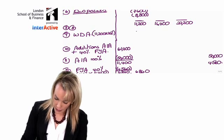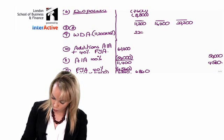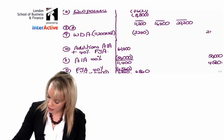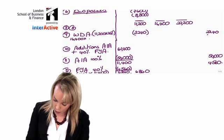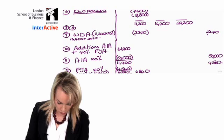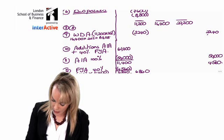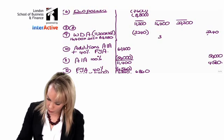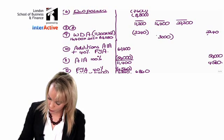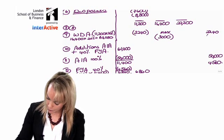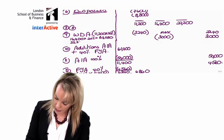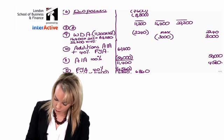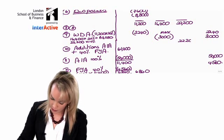On the general pool you multiply that figure by 20%, which gives you something like 2,240. On the expensive car, 16,400 times 20% gives you about 3,280, but that's subject to a maximum WDA of 3,000. On the special rate pool the WDA is only at 10%.